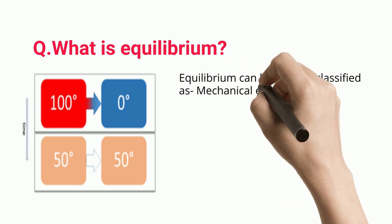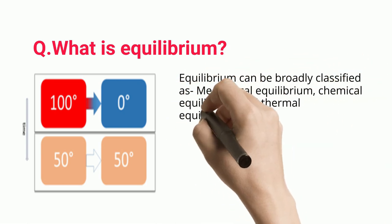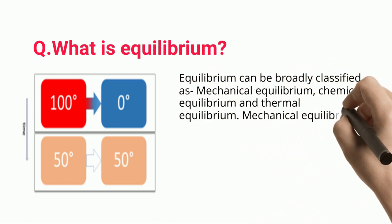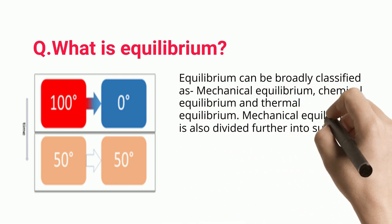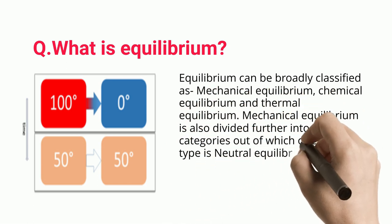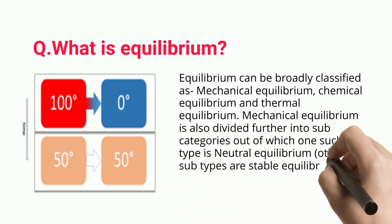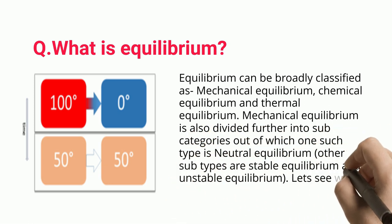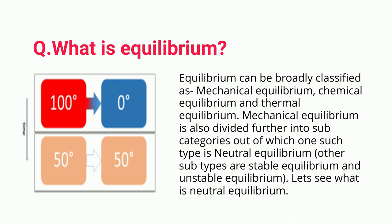Equilibrium can be broadly classified as mechanical equilibrium, chemical equilibrium, and thermal equilibrium. Mechanical equilibrium is further divided into subcategories, one of which is neutral equilibrium, while the other subtypes are stable equilibrium and unstable equilibrium.